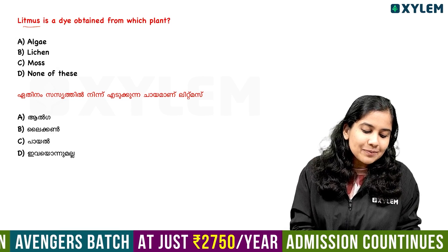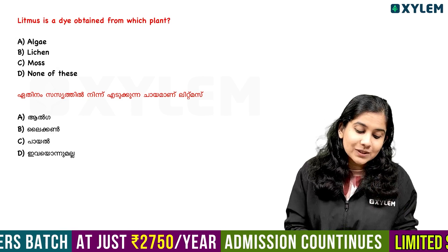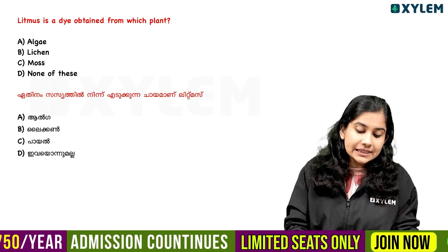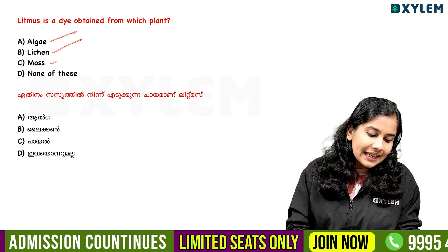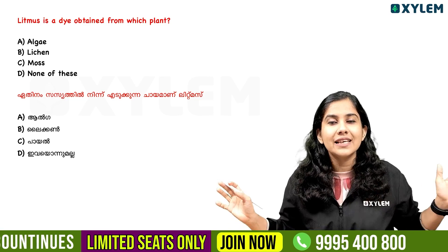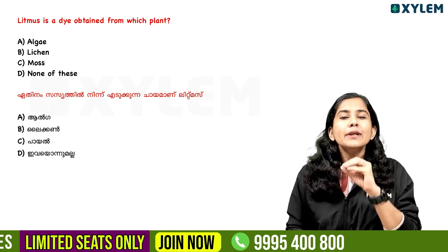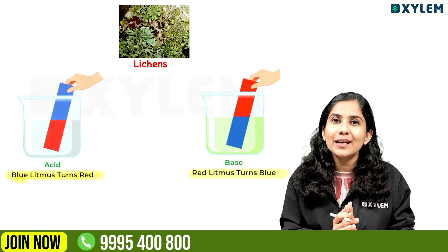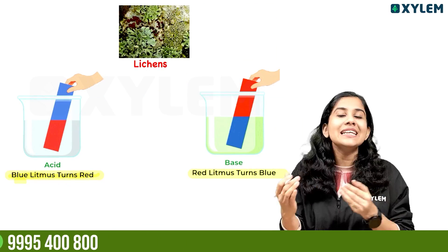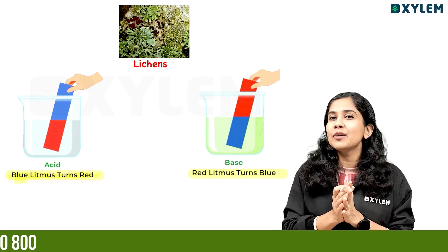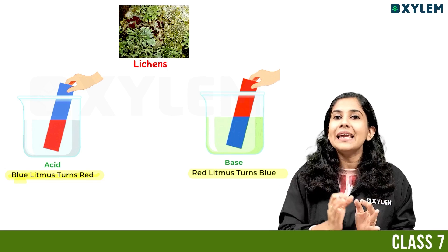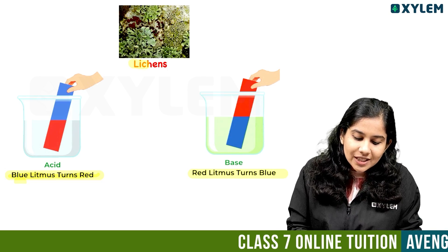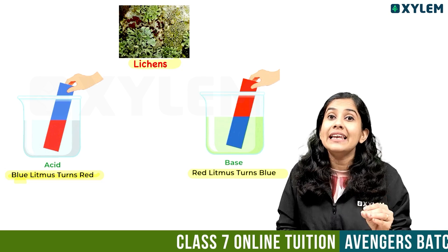The first question is about litmus. Litmus is a dye obtained from which plant? The answer is lichen. Litmus is a natural indicator. We use it to determine if a substance is acid or base.